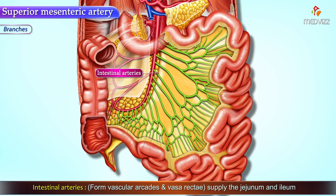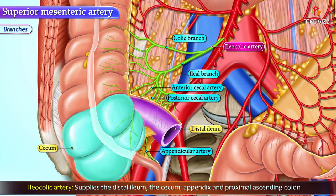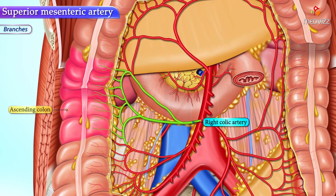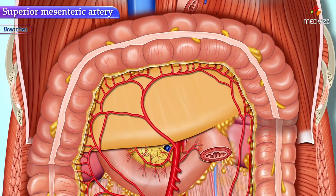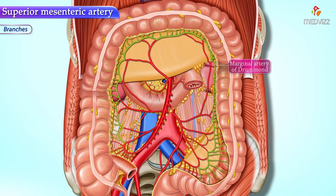The ileocolic artery supplies the distal ileum, the cecum, the proximal ascending colon, and the appendix. The right colic artery supplies the ascending colon. The middle colic artery supplies the proximal two-thirds of the transverse colon.